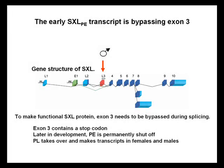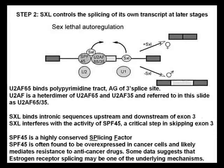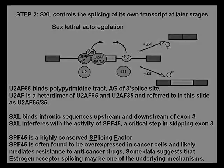The early transcript bypasses exon 3. To make functional SXL protein, exon 3 needs to be bypassed during splicing, because exon 3 contains a stop codon. Later in development, the early promoter is permanently shut off and the late promoter takes over, making transcripts in both males and females. Sex lethal controls the splicing of its own transcript at later stages of development. Sex lethal binds intron sequences upstream and downstream of exon 3, interfering with the activity of SPF45, a critical step in skipping exon 3. SPF45 is a highly conserved splicing factor.